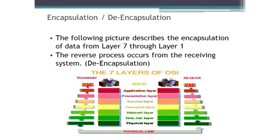The receiving side is going to do the reverse process called de-encapsulation. De-encapsulation means the receiving host is going to look at the ones and zeros that come across its network card, read the headers of those ones and zeros, put it together, and say: okay, I recognize this as Ethernet. I recognize my MAC address, so it tears its MAC address off.